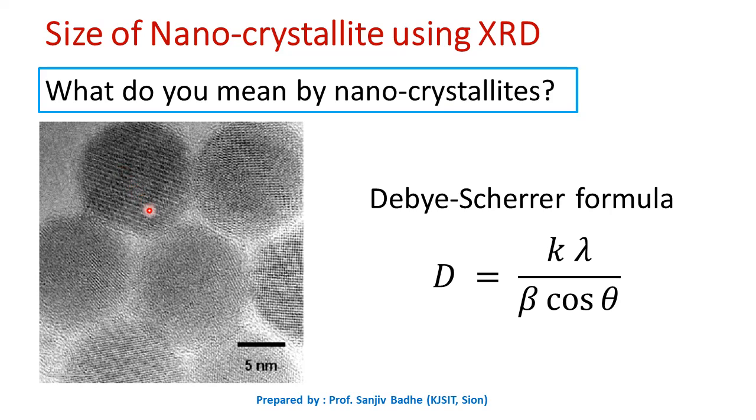We can find the size of these nanocrystallites by using Debye-Scherrer's formula: D is equal to k lambda upon beta cos theta.